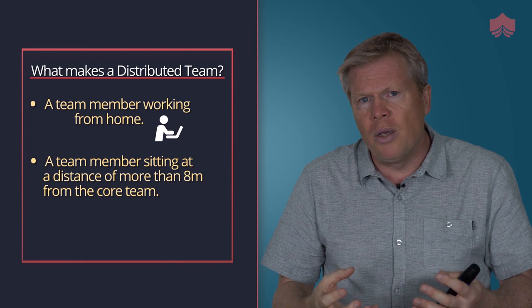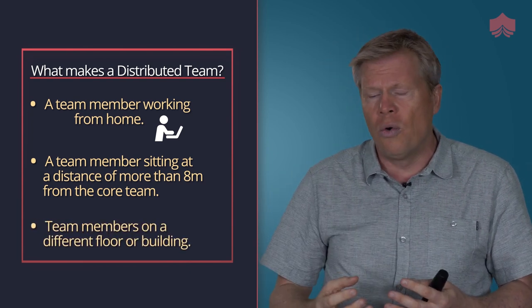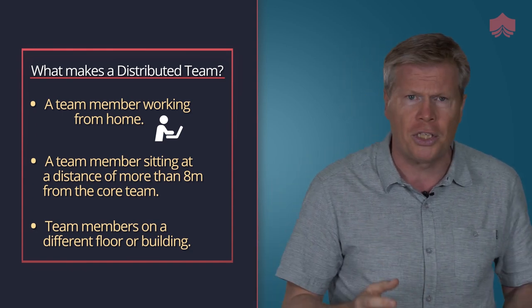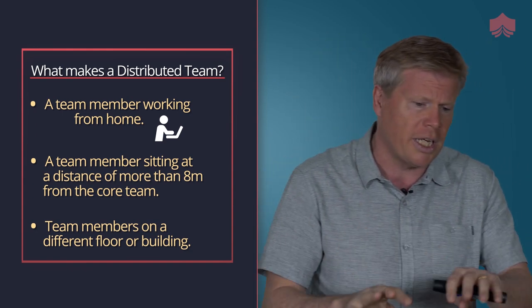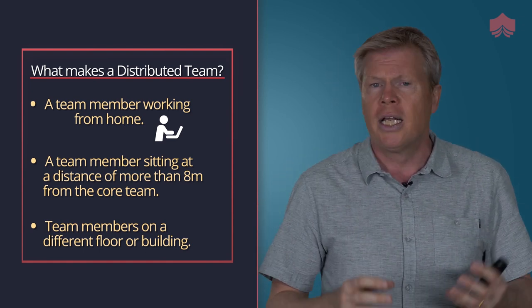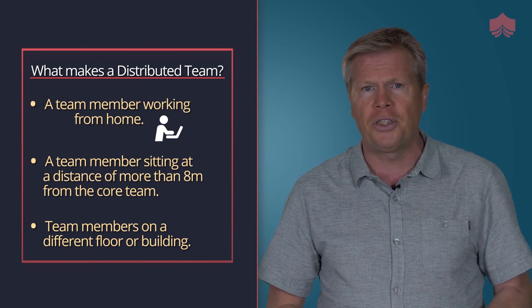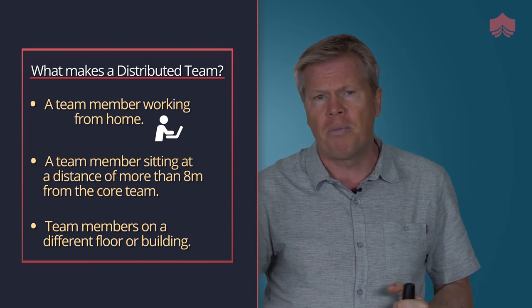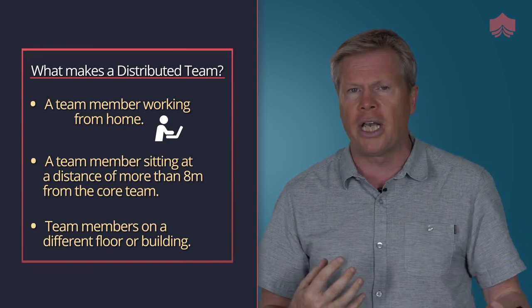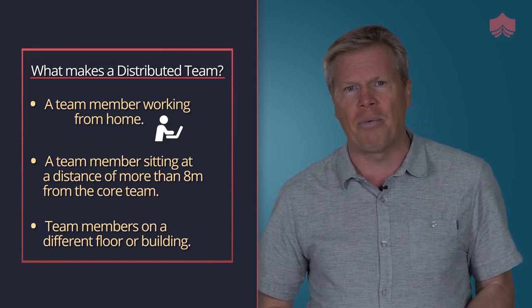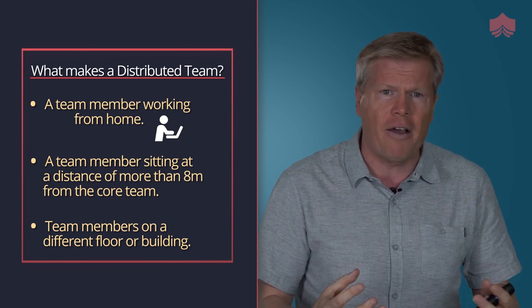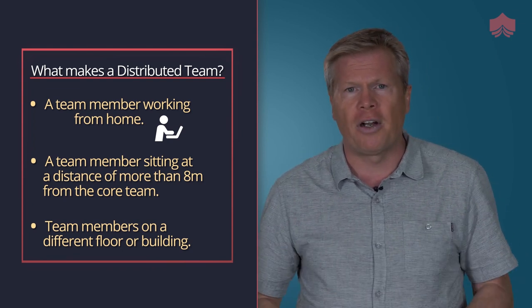The next level is when some team members are on a different floor or in a different building. Now it's a little more serious — I can't see them line-of-sight. I've got to get up, go look for them, pick up the phone, send a ping or an email just to check if they're available for 15 minutes. We can still have coffee or lunch together, and they can still be there for our daily scrum, sprint review, and planning sessions — but now it gets a little bit harder.